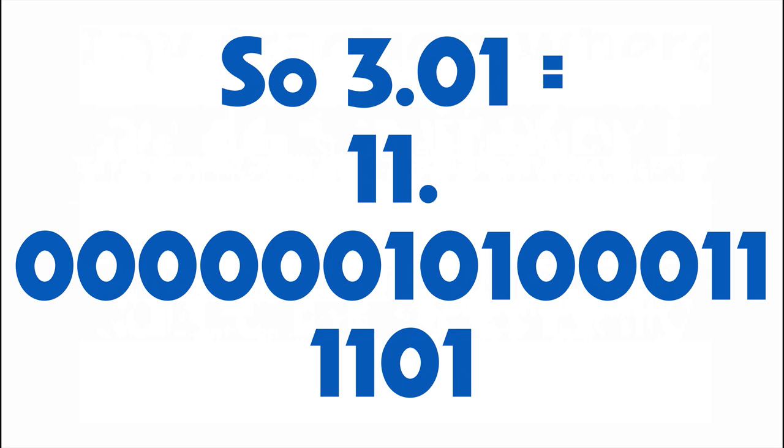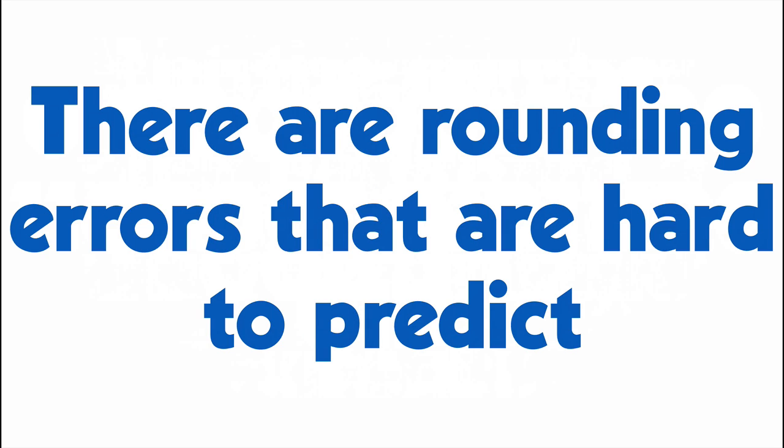So 3.01 becomes 11 for the 3, and then a long set of decimals for the 0.01, all to the power of 2, times 2 to the power of 2. But because this is inexact, you wind up with hard-to-predict errors.